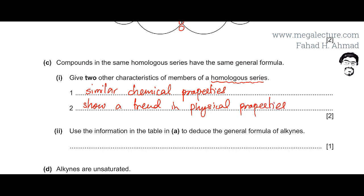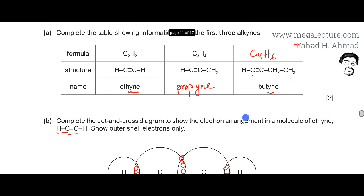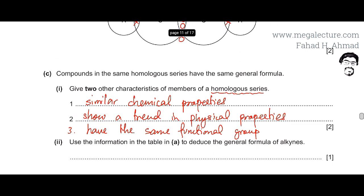Then you put them in the same homologous series. A third point is that they have the same functional group. What that means is all molecules in the same family share a group of atoms that determines the chemical properties of that compound. For example, ethyne and propyne are all in the same homologous series — they all have C triple bond C. So if they share the same functional group that determines chemical and physical properties, they are put in the same homologous series.